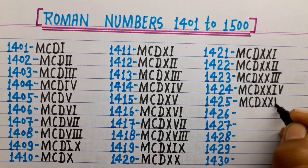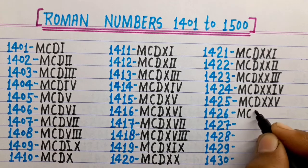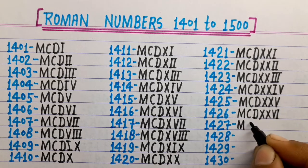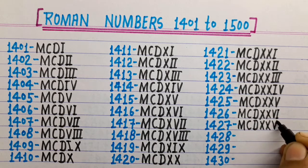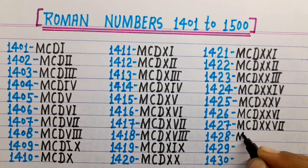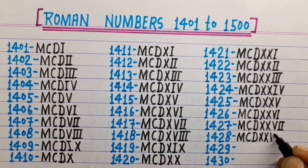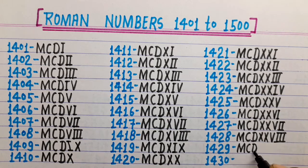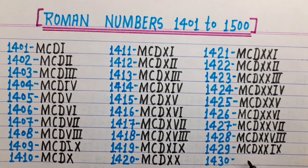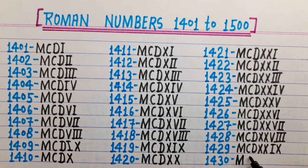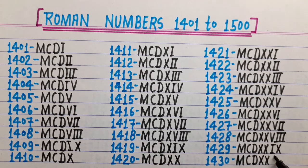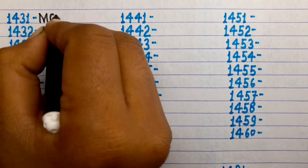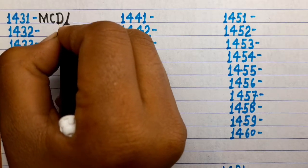1425 is MCDXXV. 1426 is MCDXXVI. 1427 is MCDXXVII. 1428 is MCDXXVIII. 1429 is MCDXXIX. 1430 is MCDXXX. 1431 is MCDXXXI.